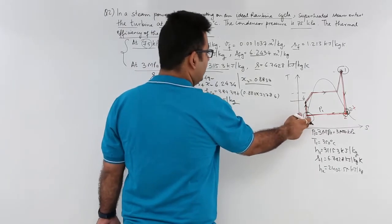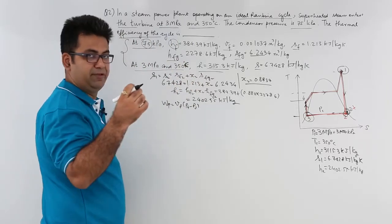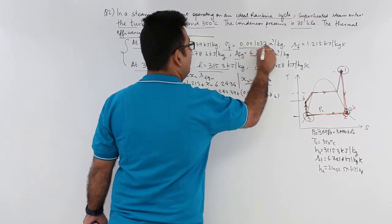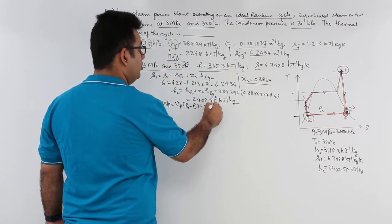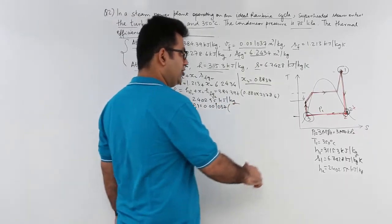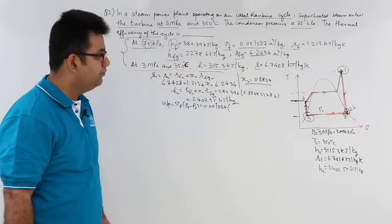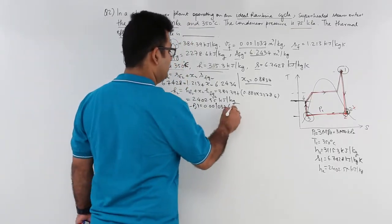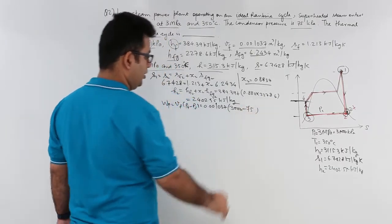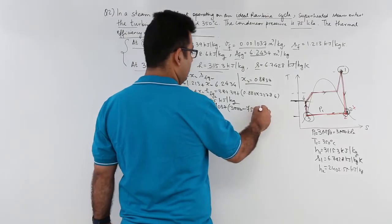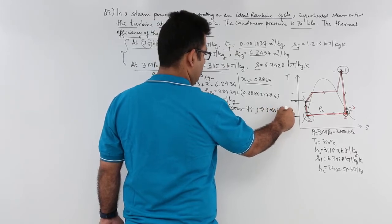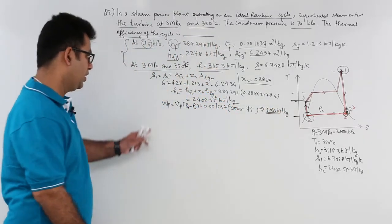VF is the state 3, the liquid specific volume at 3, corresponding to condenser pressure. That is 0.001037. P4 corresponds to the turbine pressure which is 3 MPa. So, this becomes 3000 kPa minus 75 kPa. When you solve this, the answer is approximately 3.033 kilojoule per kg. So, this is the pump work.